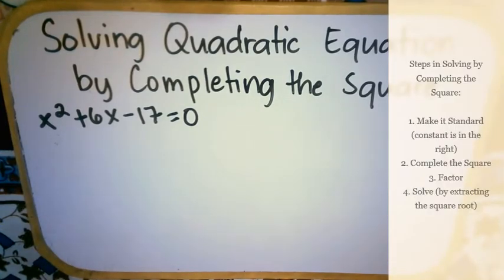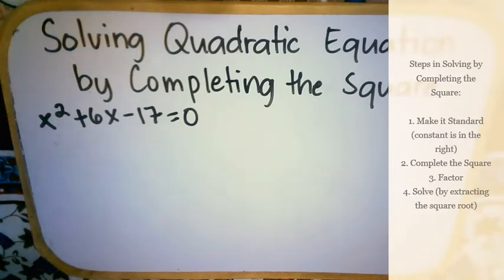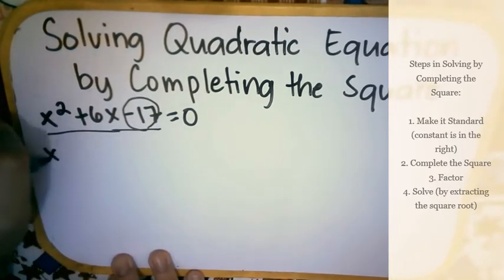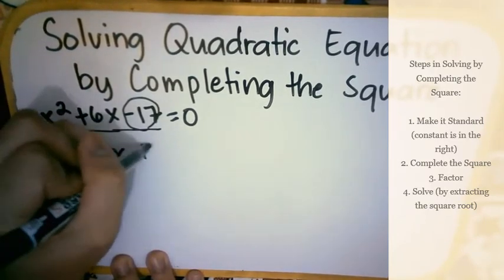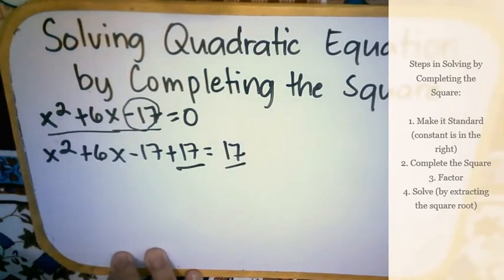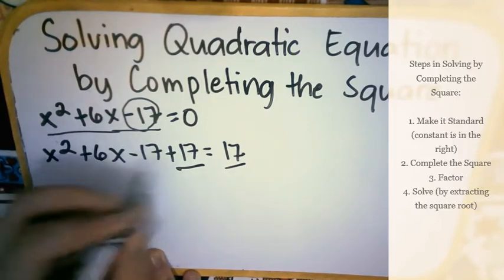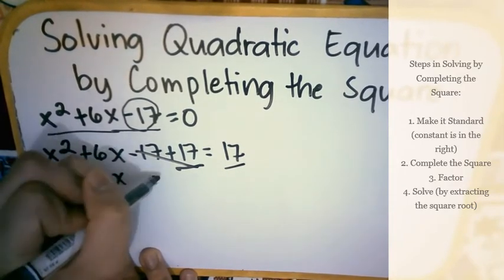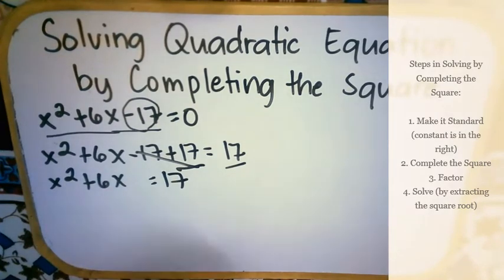First step: standard form but the constant is on the right. The equation is already in standard form, but the constant must move to the right. So: x squared plus 6x minus 17 plus 17 equals 17. We add 17 to both sides. Cancel, and we get x squared plus 6x equals 17. We are done with the first step.